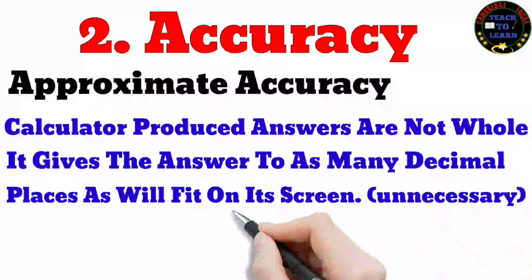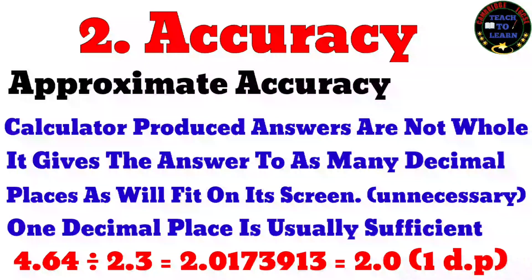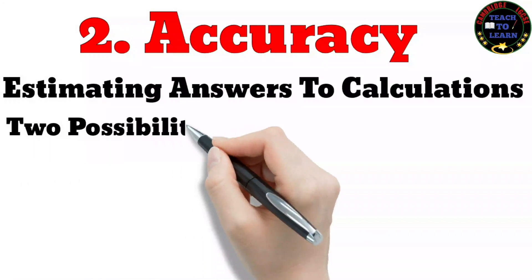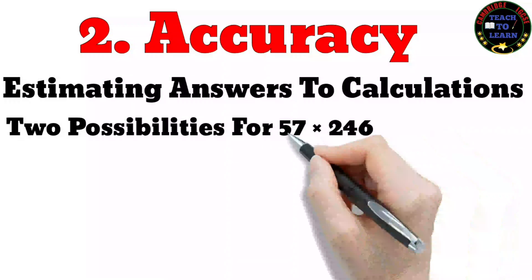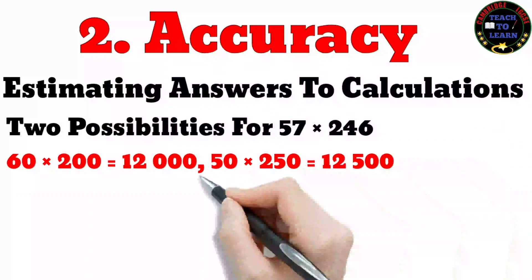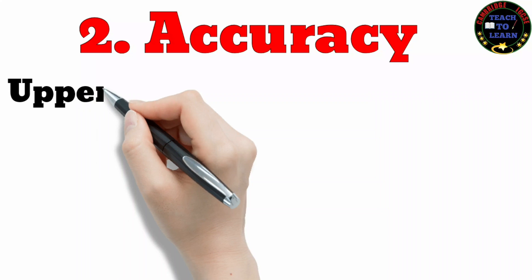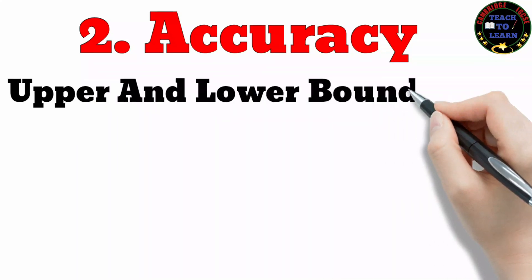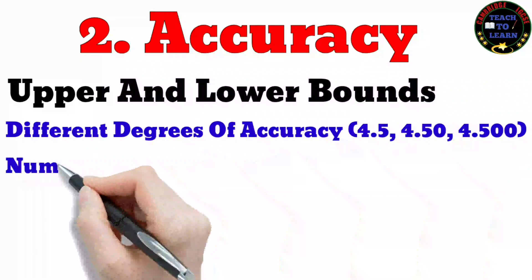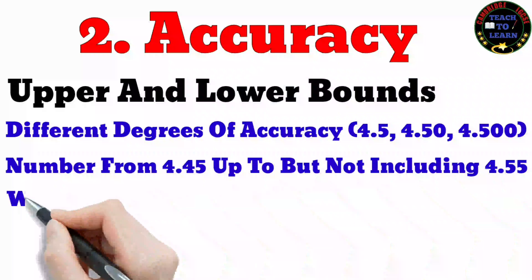Approximate accuracy: calculator-produced answers are not always whole numbers — the calculator gives the answer to as many decimal places as will fit on its screen, but this is unnecessary; one decimal place is usually sufficient. For estimating 57 × 246, two possibilities are: 60 × 200 = 12,000, or 50 × 250 = 12,500.